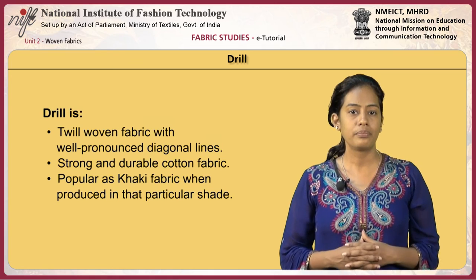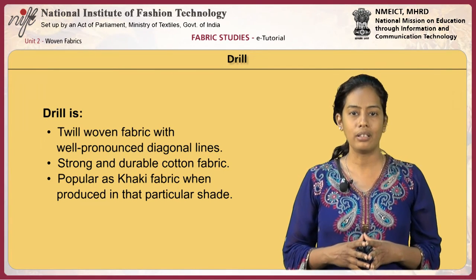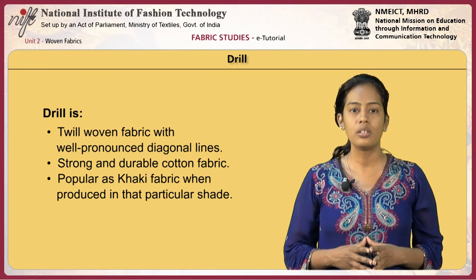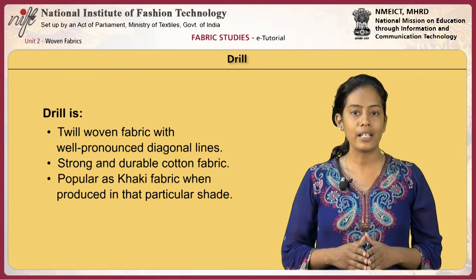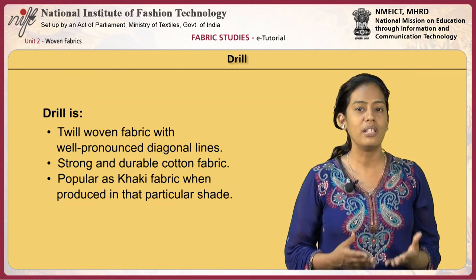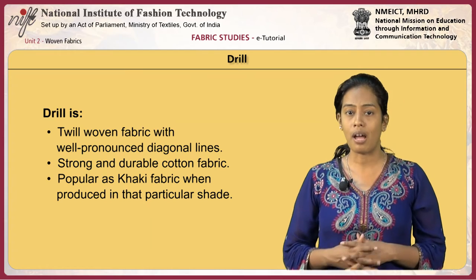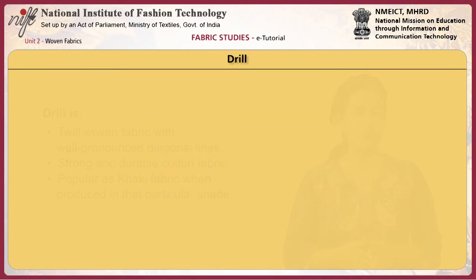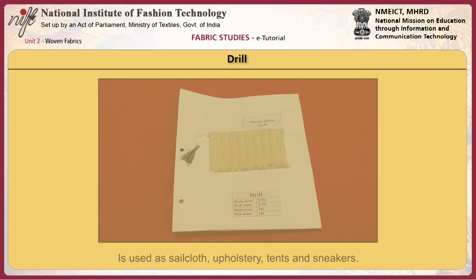Drill is a twill woven cotton fabric with well-pronounced diagonal lines. It is a strong and durable cotton fabric, ideal for work wear such as military uniforms. It is popular as khaki fabric when produced in that particular shade. It is used as sail cloth, upholstery, tents and sneakers.